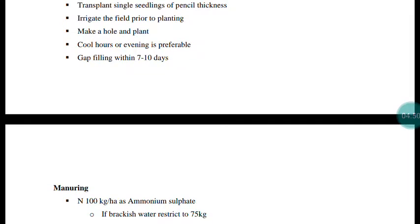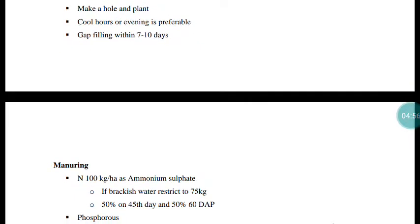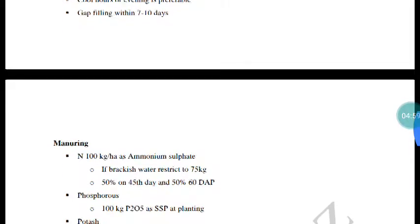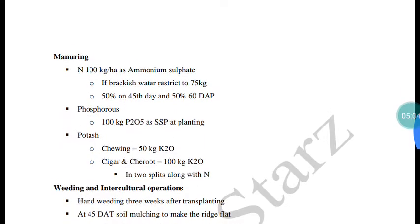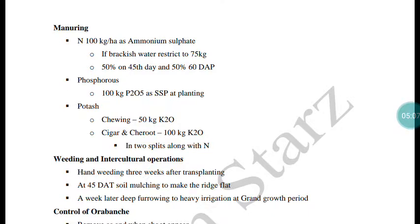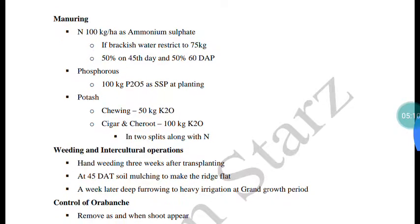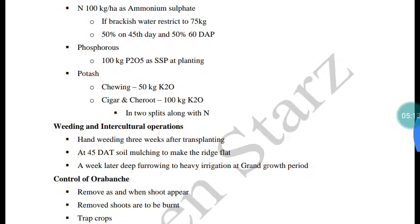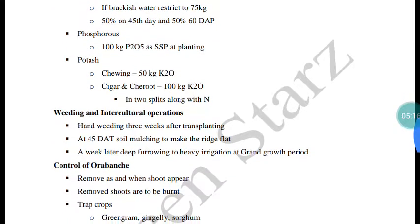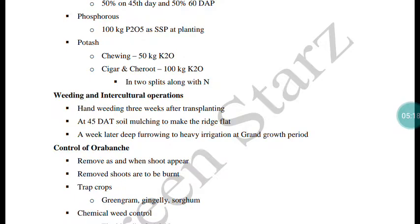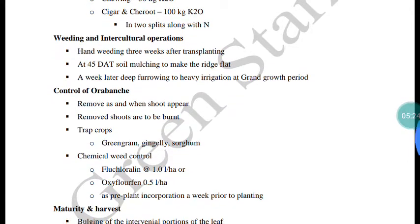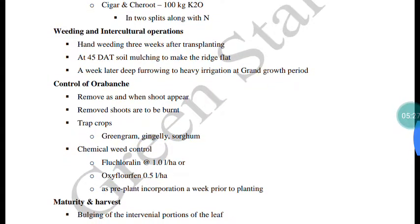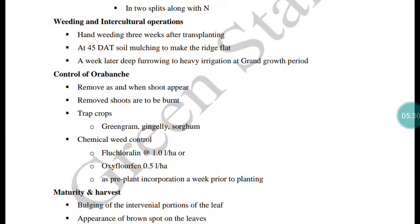Manuring for tobacco: nitrogen is applied as ammonium sulphate, phosphorus as single super phosphate, and potassium as K2O formula. Earthing up is done around the plants. Three weedings are done. After transplanting, mulching is applied to the soil.